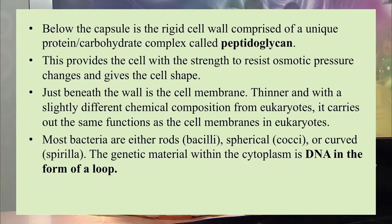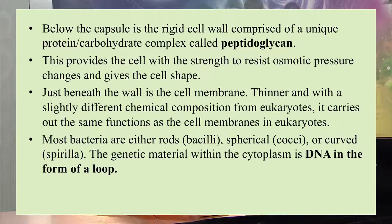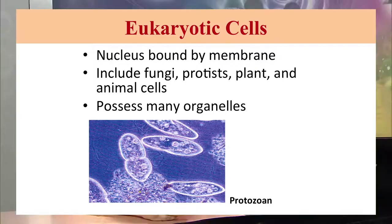Fimbriae also assist in movement. The cell wall of bacteria is made up of a carbohydrate-protein complex called peptidoglycan. This layer provides strength to resist osmotic pressure changes and gives the organism its shape. Just beneath the cell wall is the cell membrane, which is thinner and slightly different in chemical composition from eukaryotic cells, but carries out the same functions. In bacteria, the DNA is present in the form of a loop in the cytoplasm.